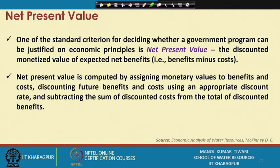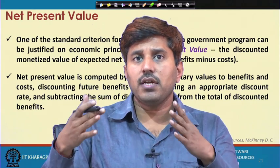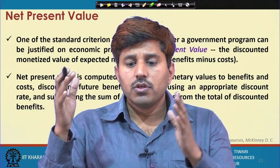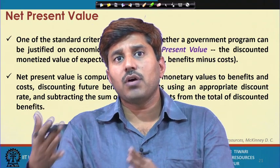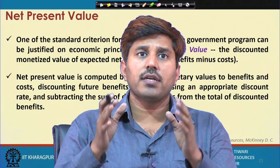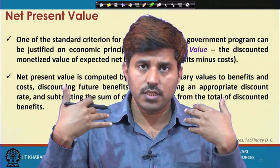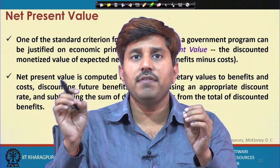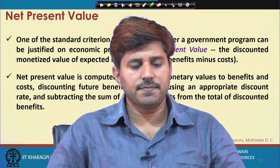One of the standard criteria for decision making on whether a program should be justified based on economic principles is NPV or Net Present Value. The net present value is the discounted monetized value of expected net benefits. When we say net benefit we are including cost as well — net benefit is total benefits minus total costs. When we apply the discounting rate we get the net benefit in present terms, and that is called the Net Present Value or NPV of a project.